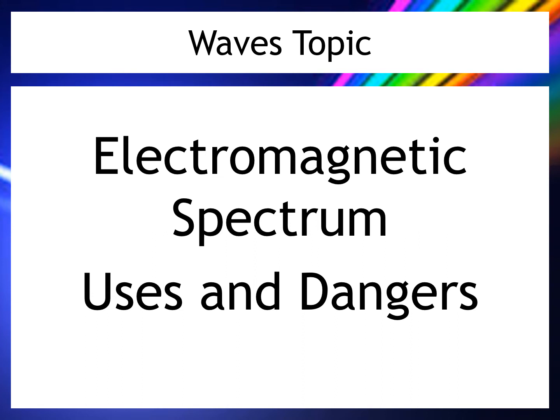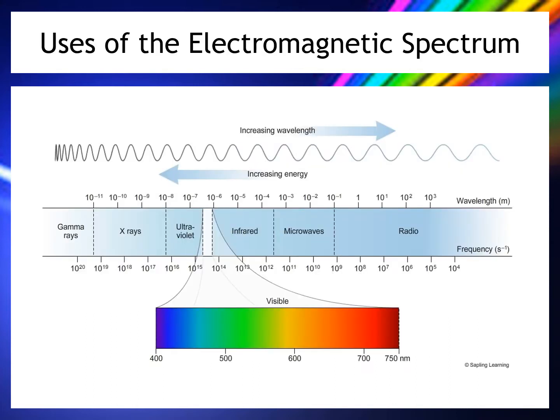This is the second lesson on the electromagnetic spectrum, focusing on uses and dangers. Recapping from last lesson: as we go towards the right-hand side towards radio waves, the wavelength gets longer and frequency decreases. Going towards the left-hand side, frequency increases and wavelength gets shorter. Importantly, as we go to the left where frequency is higher, energy also increases.